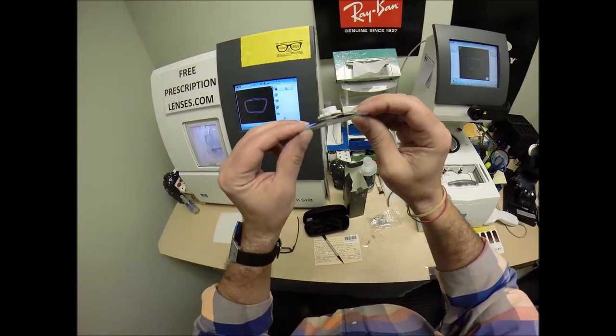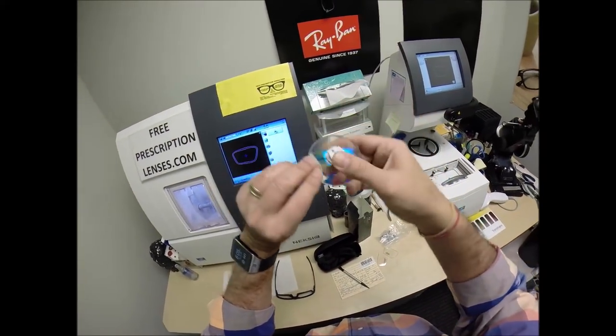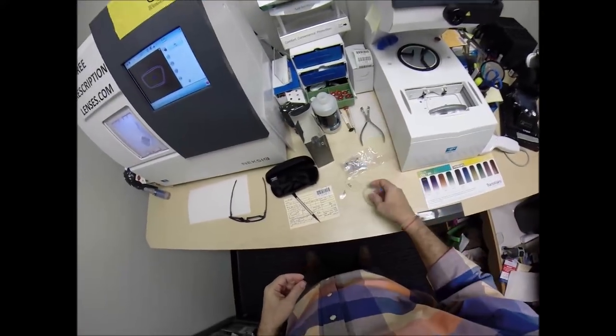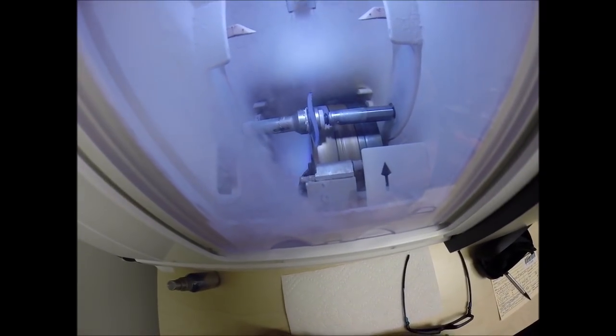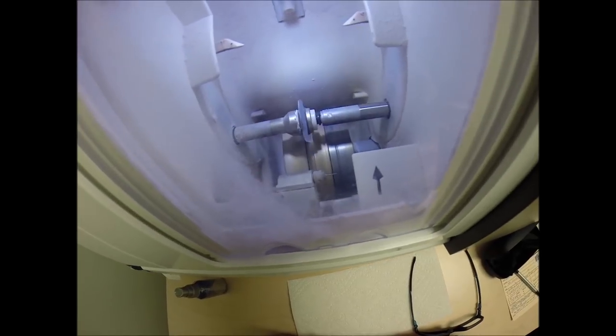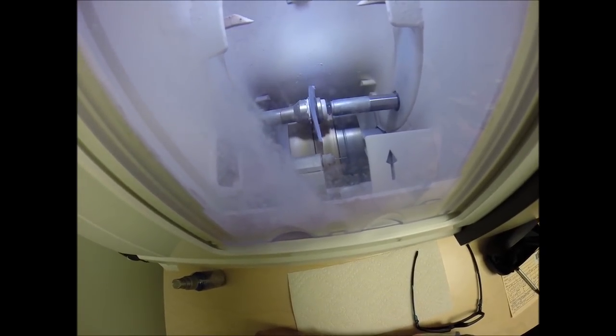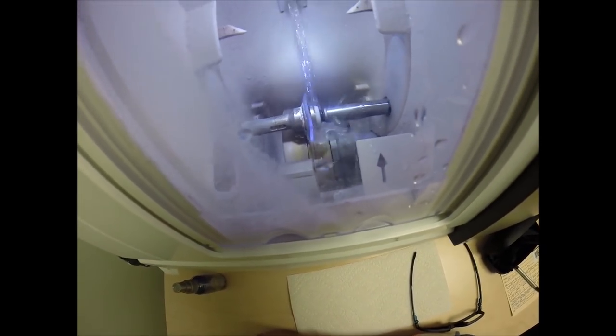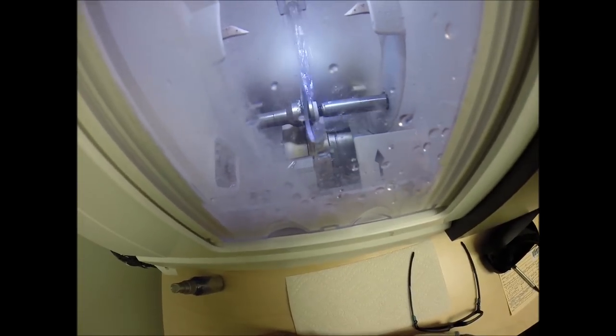Your lenses are made out of polycarbonate, which is 40% thinner and lighter than regular plastic. They're virtually unbreakable, high impact ballistics grade lenses. Your lenses also have 100% UVA and UVB protection built into the lens. This is permanent and never needs to be reapplied. Your lens is now on the bevel wheel, getting the knife-like edge. Water has begun spraying.